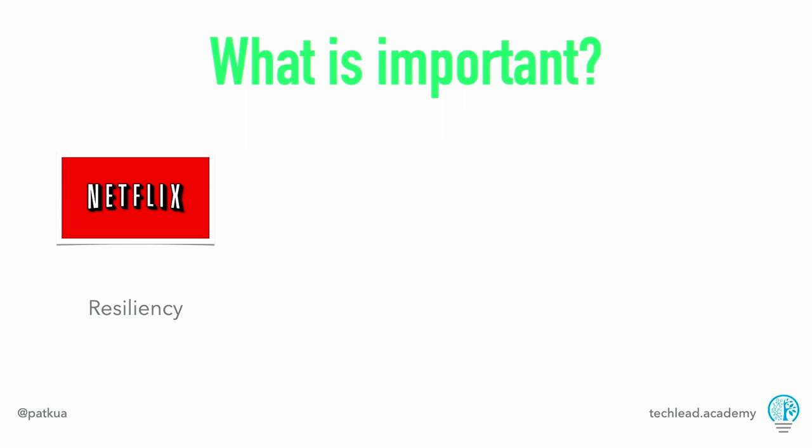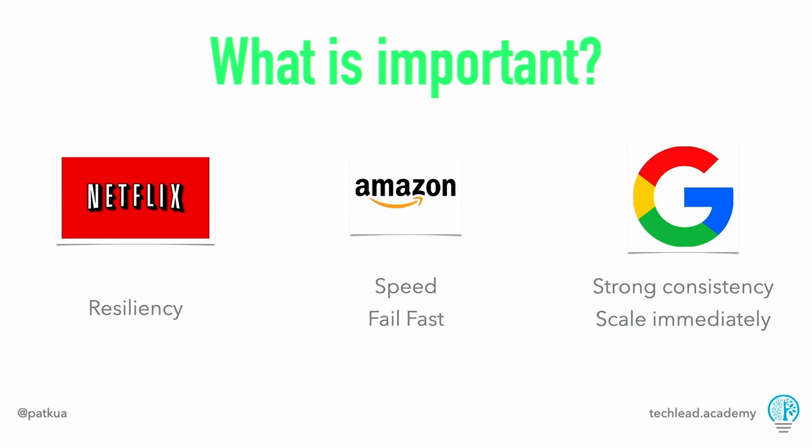What's important will change. Think about the tech giants and what they're optimizing for. Netflix has optimized a lot for resiliency. Amazon has really optimized for speed and failing fast, experimentation. Google is optimizing for strong consistency and scale across the entire world immediately. But we know from making decisions there is no perfect decision, no perfect architecture. What are the trade-offs you're going to optimize for? If you optimize for these things, you're probably going to have to trade something off — so be deliberate about that.